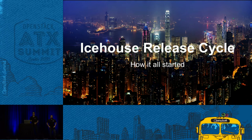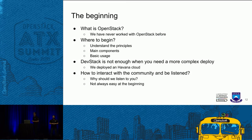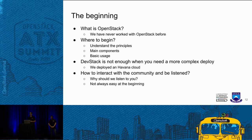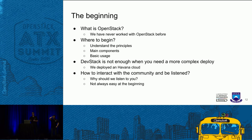Our project started at the middle of the Icehouse release and no one on the team had ever worked with OpenStack before. We tried to understand the main principles and components of OpenStack, and we used DevStack for it — to get basic usage on the Horizon dashboard, CLI clients, and the API. After that, we noticed that DevStack is not enough when you need a more complex deploy. So we deployed a Havana cloud in our lab. Then we noticed how to interact with the community and how to be listening.